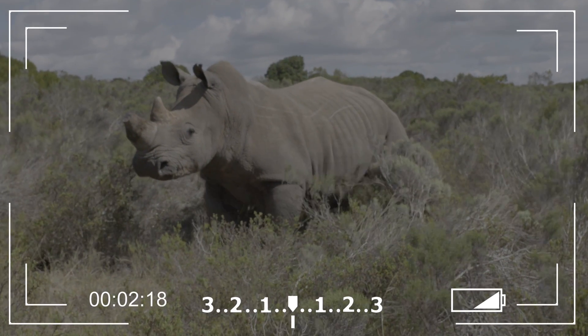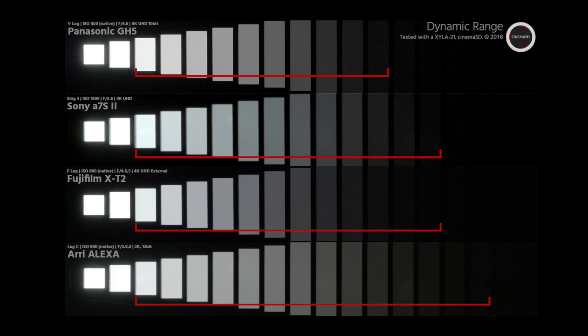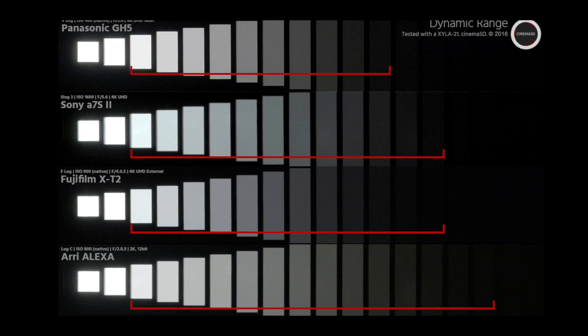Why does it look so mushy and grey in the monitor? That is because it's a log image — short for logarithmic — an option you have when working with modern cameras. The dynamic range of cameras is constantly increasing, meaning there can be very dark and very bright areas in an image at the same time, without cutting off detail on either end.